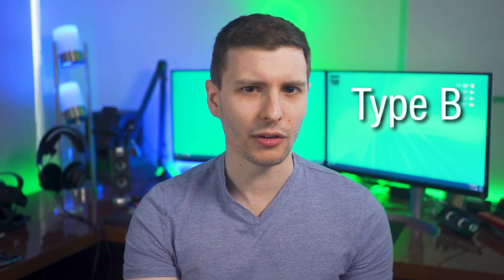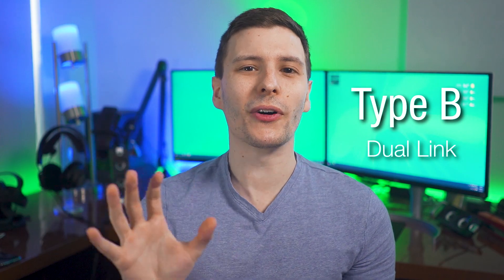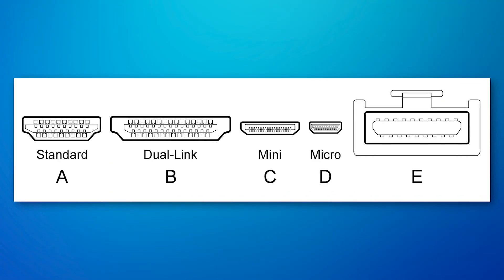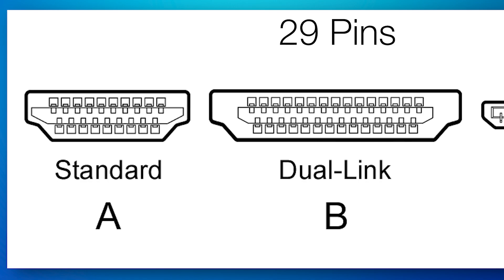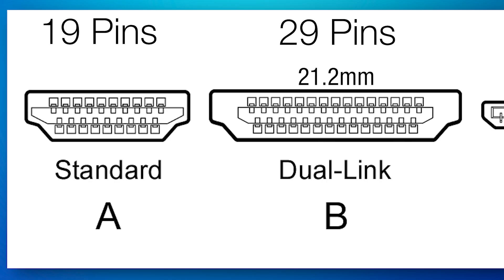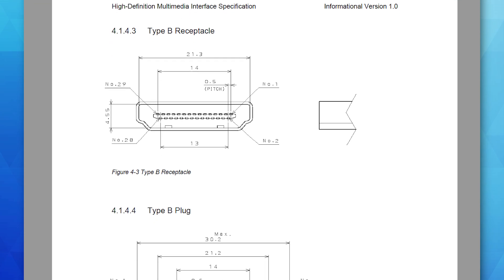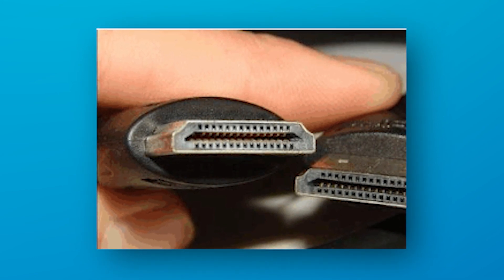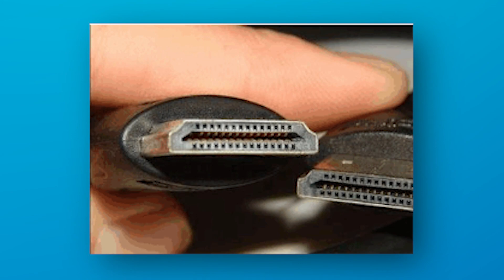Now finally, let's talk about HDMI type B, called dual link — and this is by far the rarest of them all. I've also seen it referred to as extended pin HDMI. The difference between this one and the standard is it's much longer and larger: it has 29 pins instead of the standard 19, and it's 21.2 millimeters wide versus the standard 19.3 millimeters wide. This connector is so rare that it was apparently never actually used in any actual product. And this isn't a new connector that hasn't caught on — it came out at the same time as the type A in the original HDMI 1.0 spec. I could only find a couple of pictures of this connector, and they appear to be prototypes from cable manufacturers.